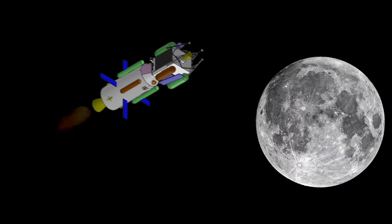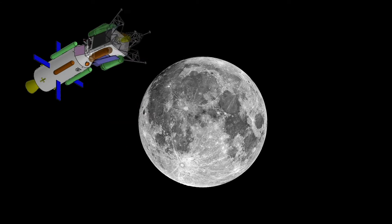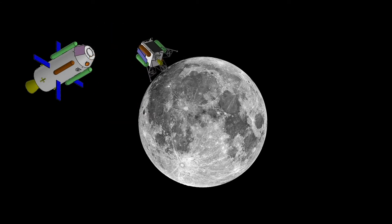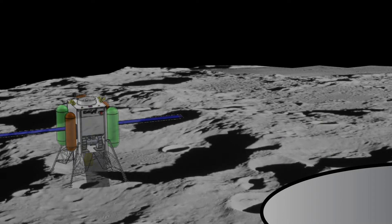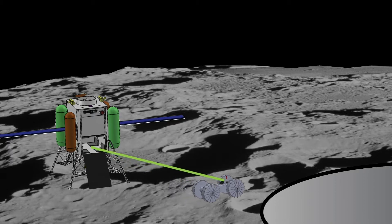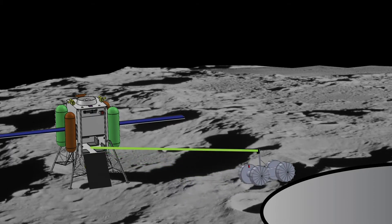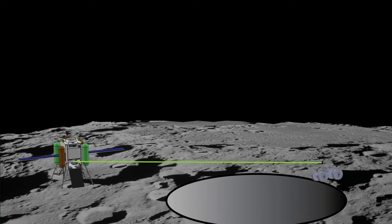Once LLO insertion is complete, the orbiter will collect surface data to ensure a safe landing site. On the surface of the moon, the rover will then exit the lander, attached by both a zip line and a powered tether. The rover will deploy a mast containing a black box system to control the pulleys for the zip line and tether, then traverse the lunar surface towards a desirable deployment secant line.